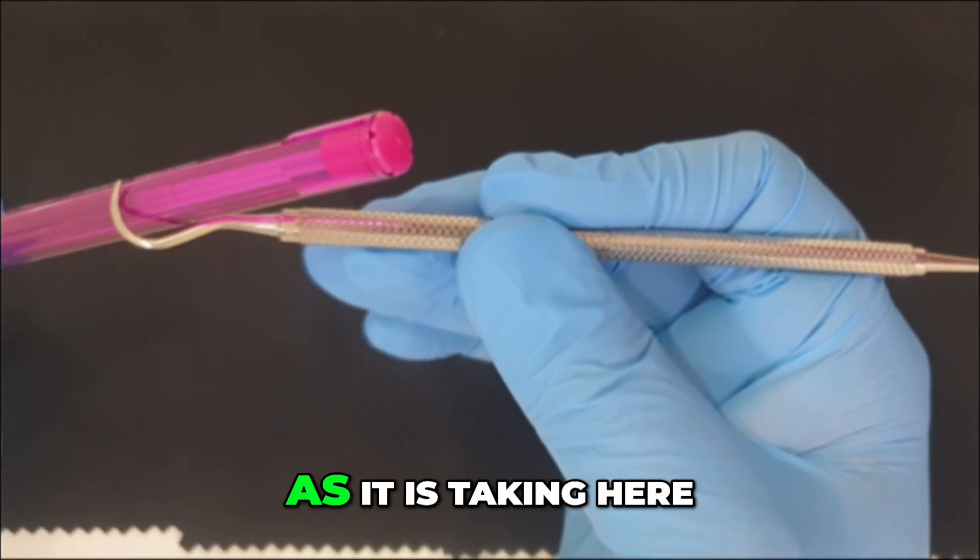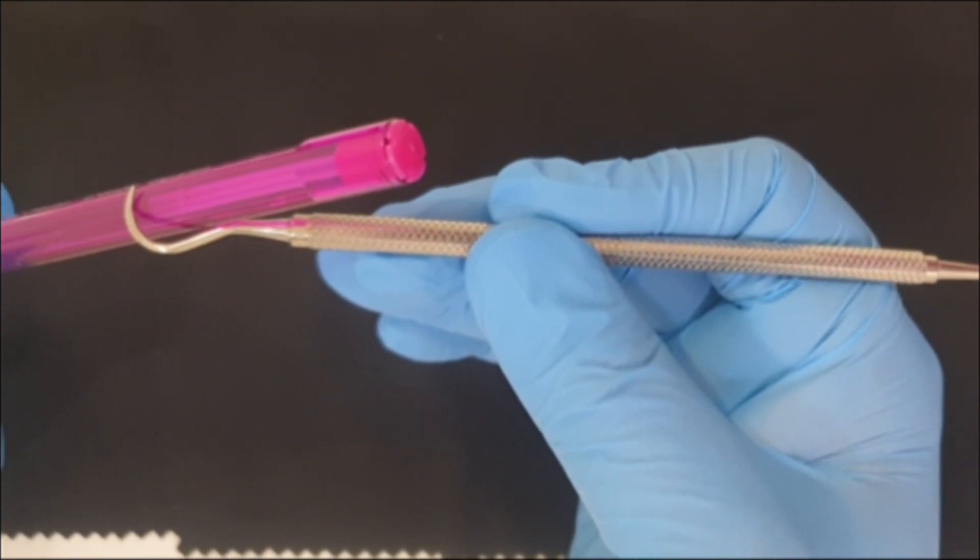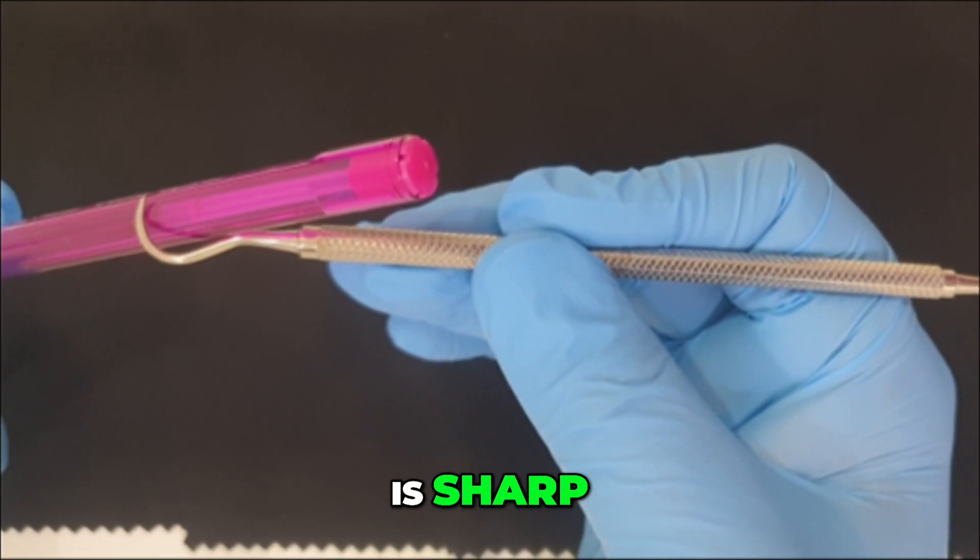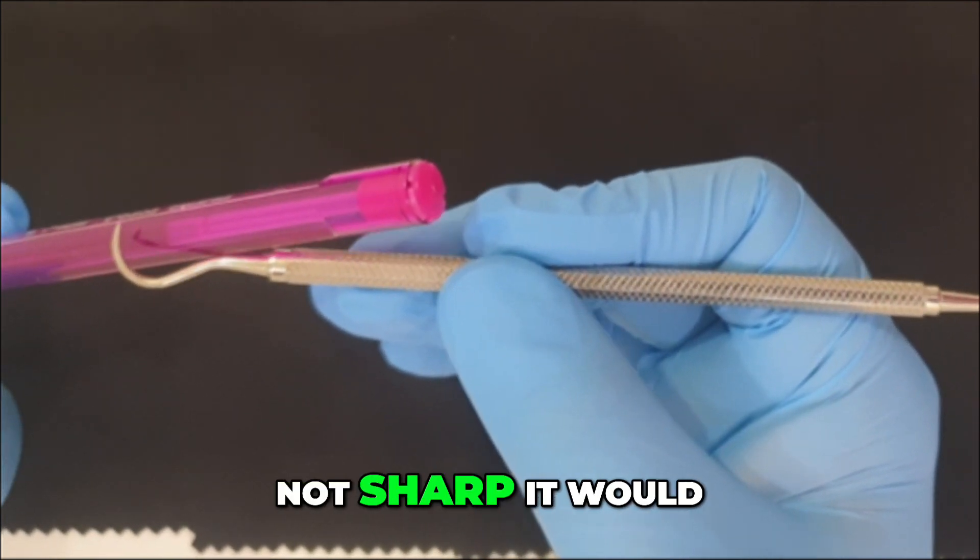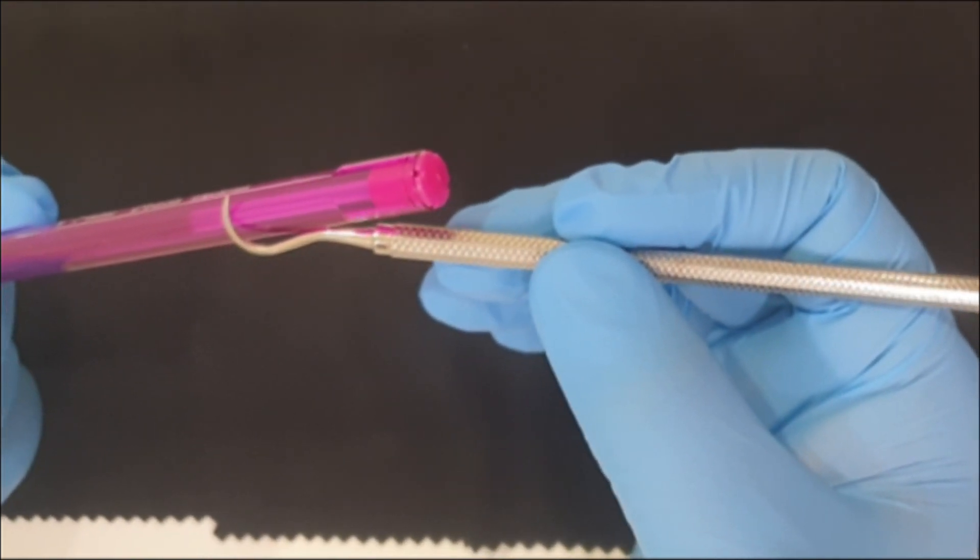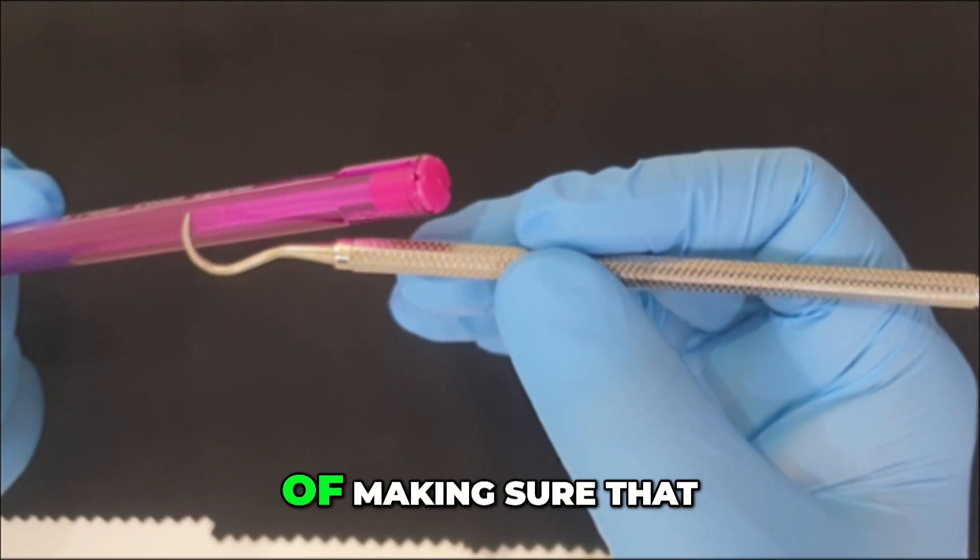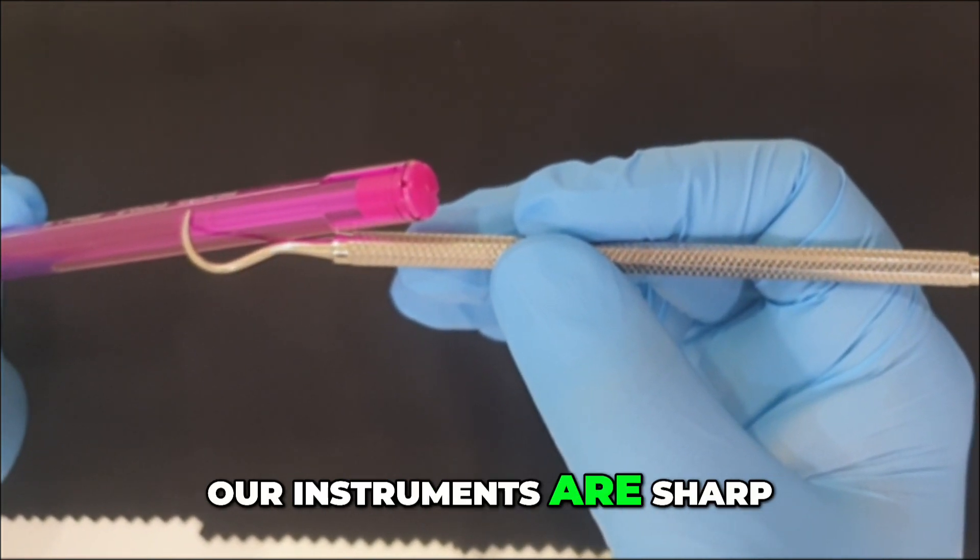If it takes bite, as it is taking here, that means my instrument is sharp. If my instrument is not sharp, it will just slide on the acrylic stick. That is one way of making sure that our instruments are sharp.